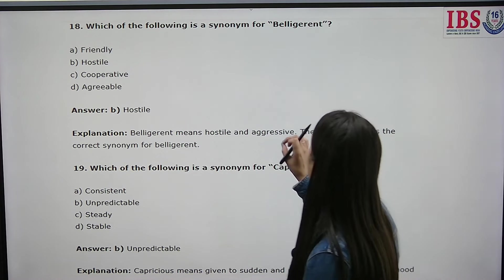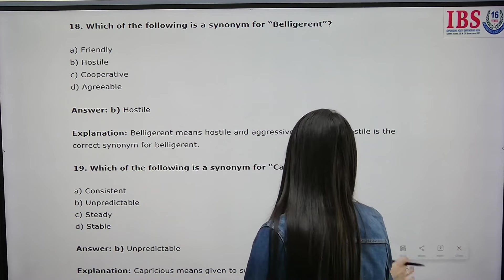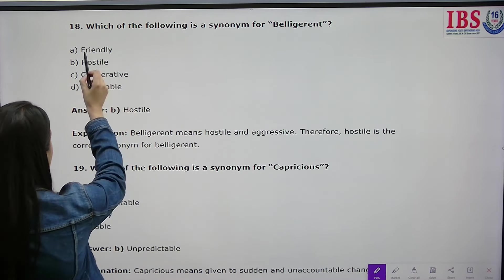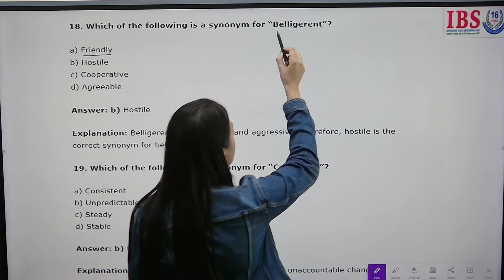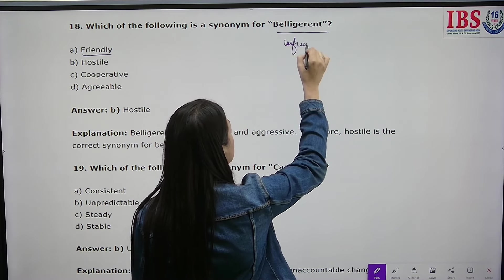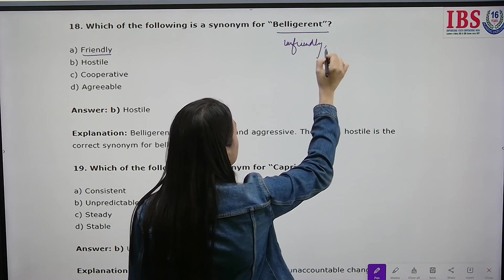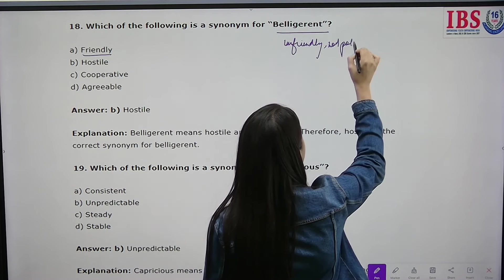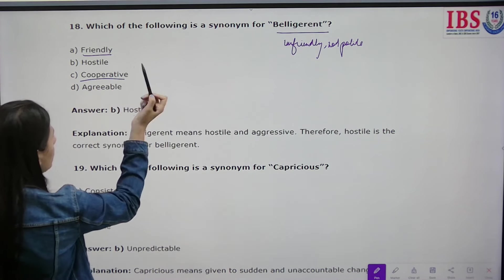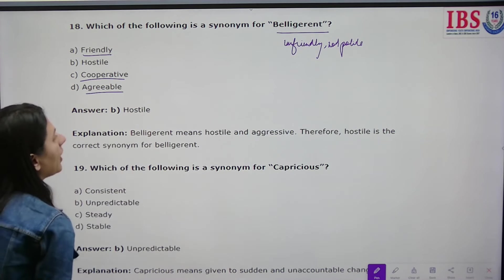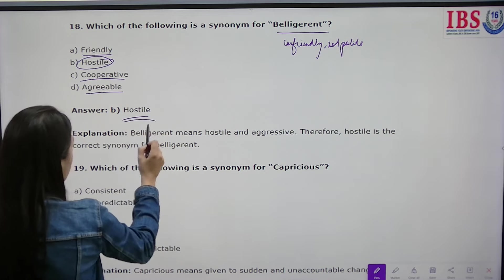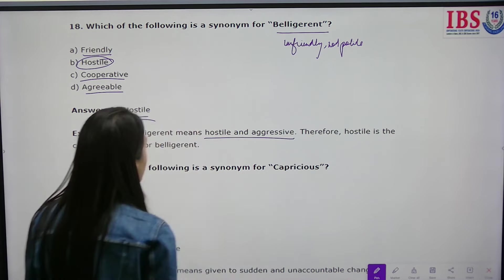Which of the following is a synonym for 'belligerent'? The options are friendly, hostile, cooperative, and agreeable. Friendly means pleasant and nice. Cooperative means someone who cooperates. Agreeable means someone whose words can be accepted. But hostile means aggressive and unfriendly — not polite. Belligerent means aggressive, so hostile is the correct synonym.